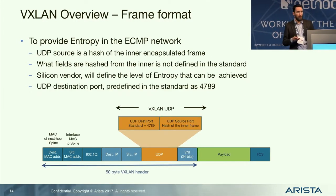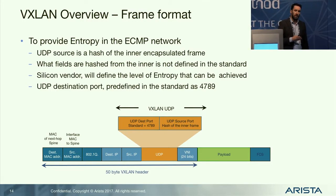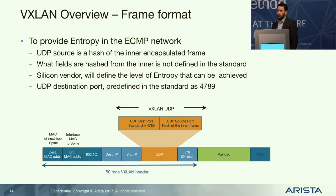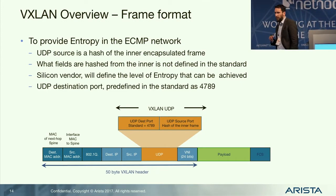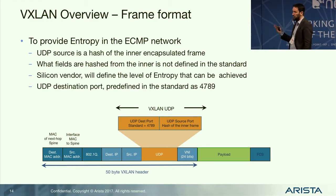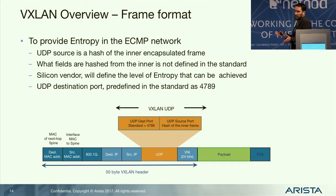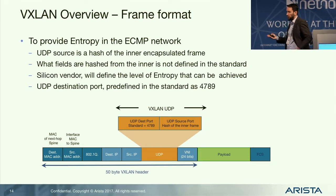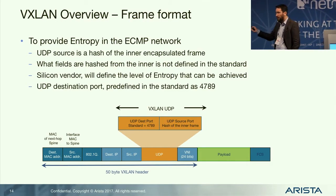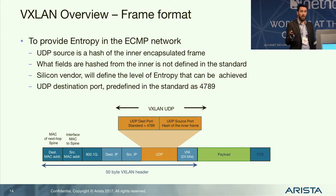The reason UDP was used is to provide entropy in the packet. The destination port is predefined, but the source port of the UDP packet is actually a hash of the inner packet — depending on the chip vendor, that could be just the Ethernet frame or the Ethernet and IP. By generating the source port via hash of the encapsulated frame, you have entropy when doing ECMP.